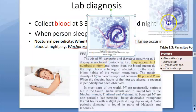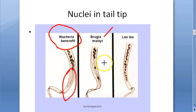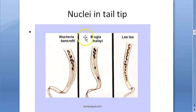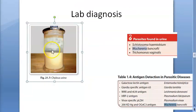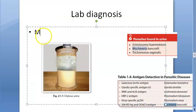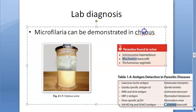For Wuchereria bancrofti microfilaria, there is no nucleus in the tail. Brugia malayi, which can also cause lymphatic filariasis, has two nuclei in the tail. Loa loa has nuclei all the way to the end. Remember: Wuchereria bancrofti and Brugia malayi for lymphatic filariasis. You can also demonstrate microfilaria in chylous urine.